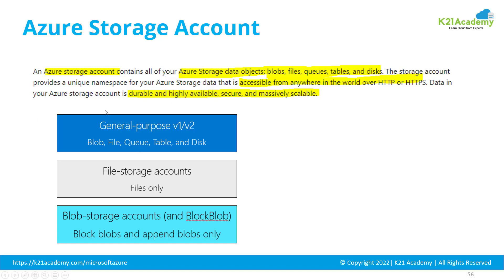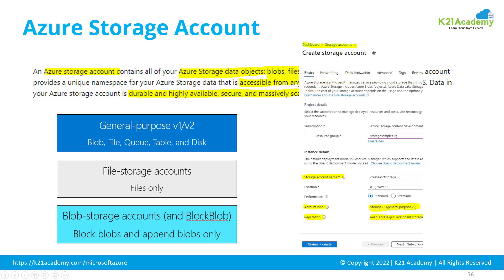There are different categories of storage account. When you go to Azure and create a storage account, you select the storage account kind, which dictates whether it's General Purpose V1, V2, a File Storage account, or a Blob Storage-only account. You can create multiple storage accounts. You can also select a replication option — no replication, replicate within data centers, replicate across availability zones, or across regions.